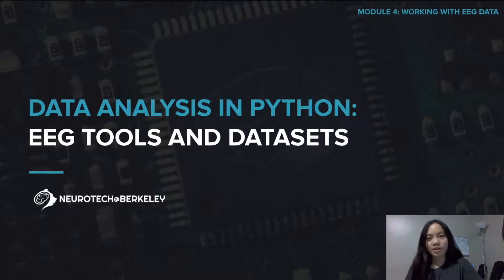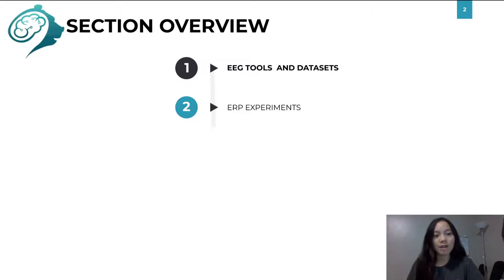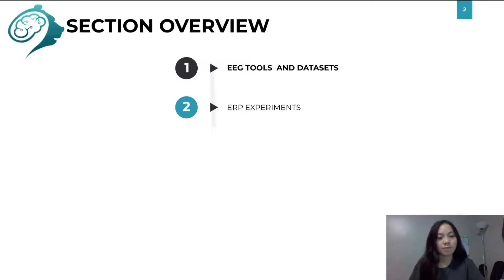Welcome back to Module 4, Working with EEG Data. This section is about data analysis in Python, and this lesson is going to be about EEG tools and datasets that you can use. The slides for this section are going to be relatively short since half of the material will be covered in the Google Colab notebook, linked in the description below. You can watch these videos in the Google Colab notebook itself and work on it without downloading anything. The datasets you will be using are already imported from the existing code for your convenience. So now let's get started.